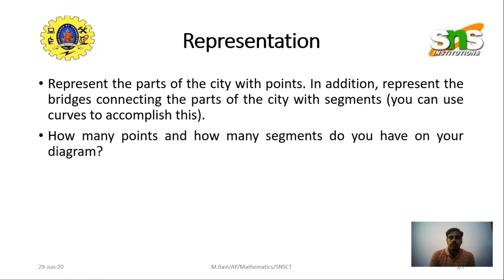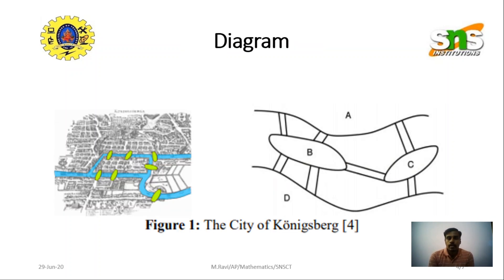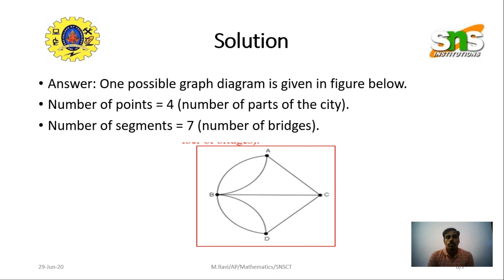The parts of the city are represented with points (vertices), and the bridges connecting the parts of the city are represented with segments (edges). There are four parts of the city: A, B, C, and D — so we use four vertices. There are seven bridges, so we have seven edges. The number of segments equals the number of bridges.